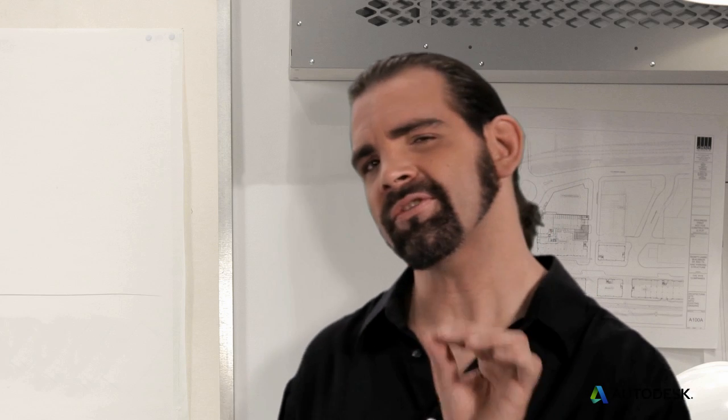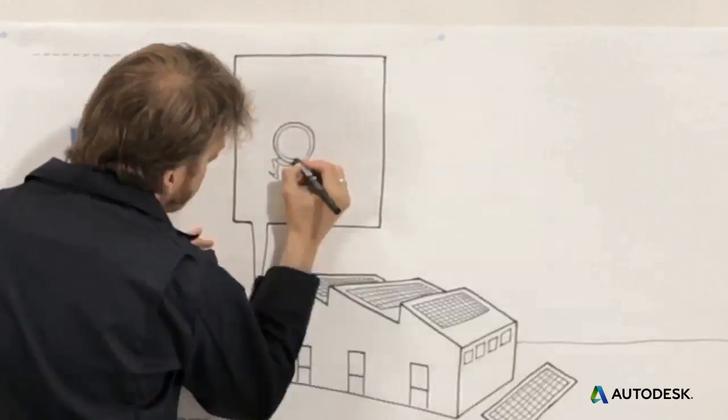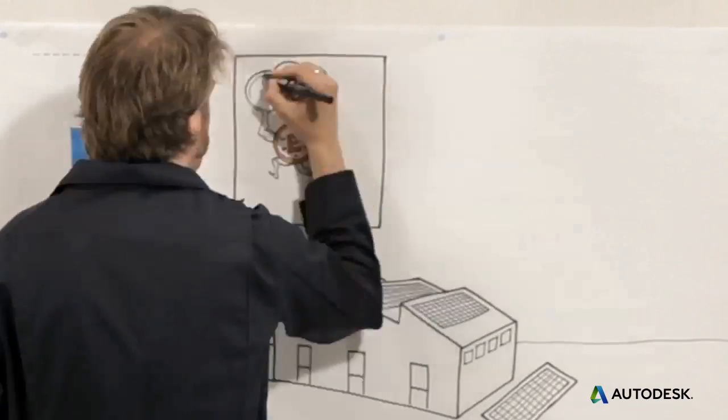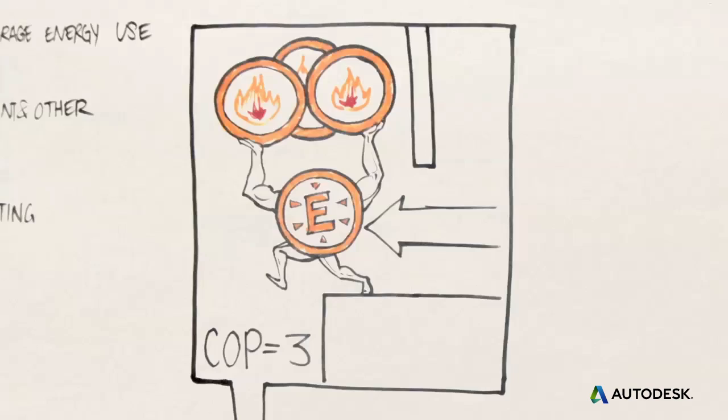No matter what equipment you use, you want to size it correctly and choose components with the highest energy efficiency ratings. For instance, heat pumps are rated by Coefficient of Performance, or COP. It's the amount of heat energy moved divided by the energy used to move it.